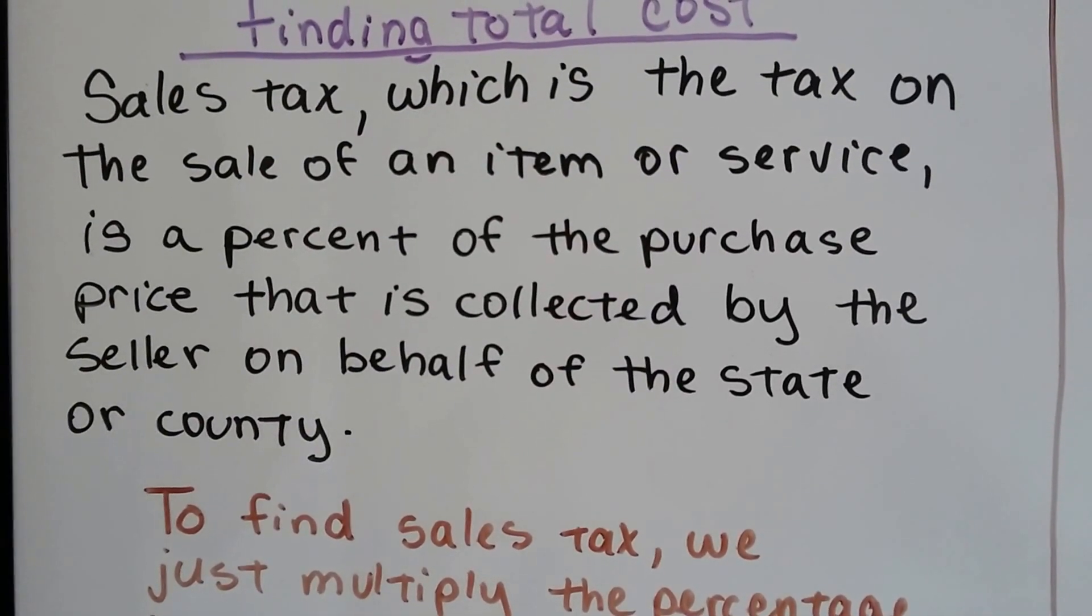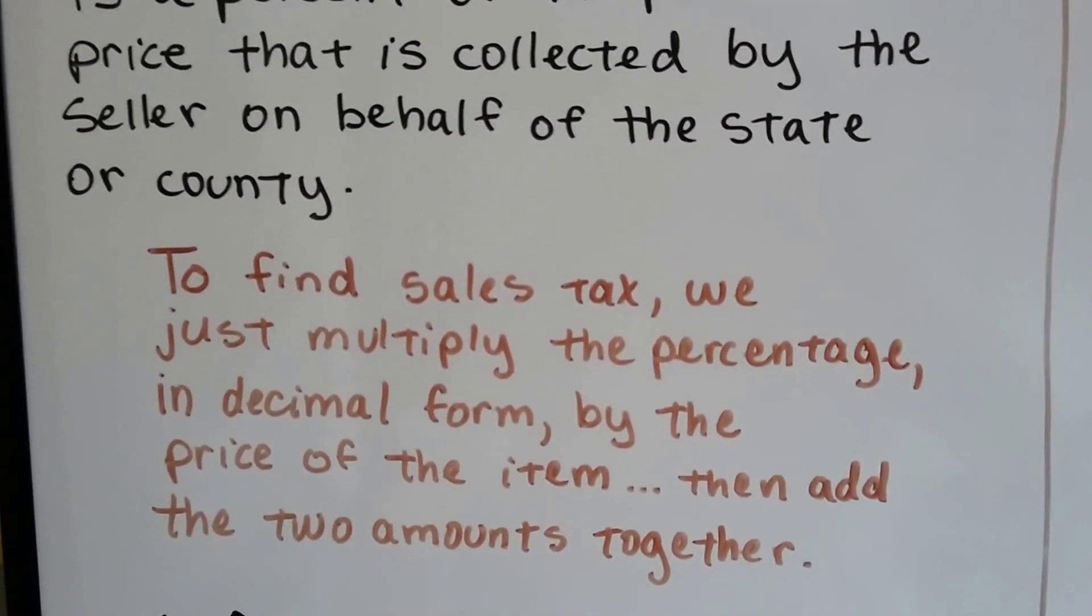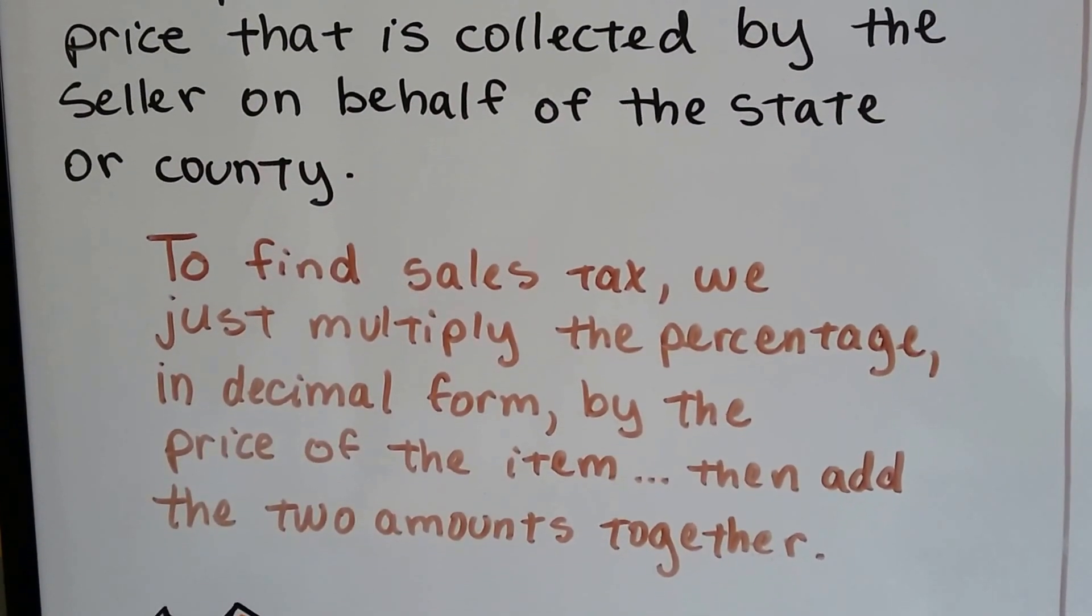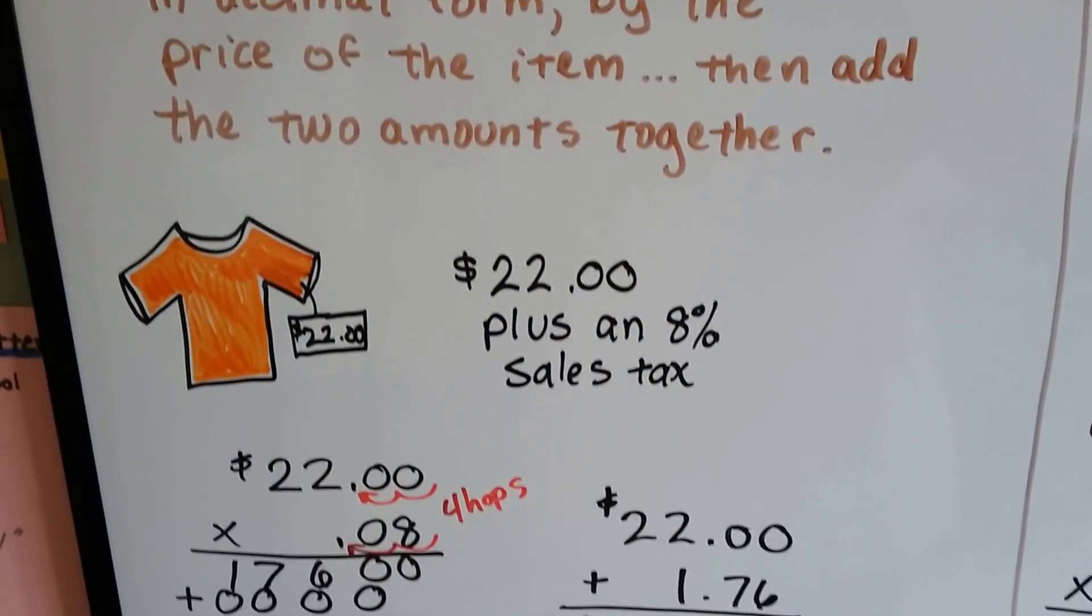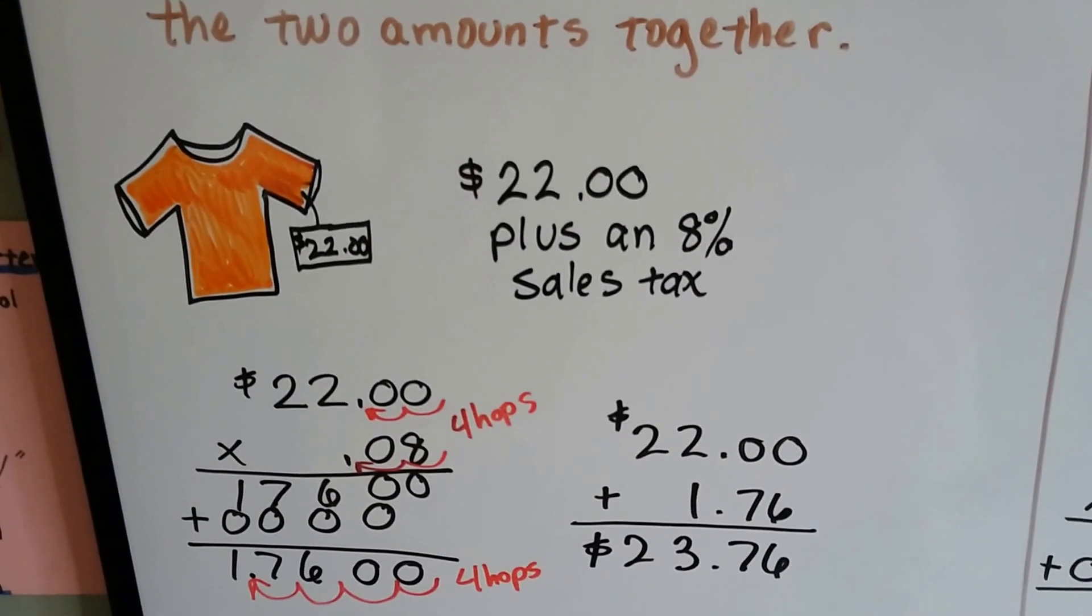It's a state or county tax. And to find the sales tax, we just multiply the percentage in decimal form by the price of the item. We add the two amounts together. It's just like we did with the percent increase video.